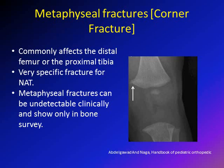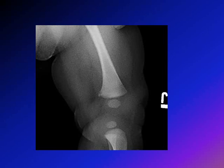Metaphyseal fractures, also called corner fractures, are very specific for non-accidental trauma. They can occur at the distal femur or proximal tibia and show up on bone survey x-rays. They may be hard to detect clinically. An important differential diagnosis to keep in mind is that a bone spur can appear normally adjacent to the physis.